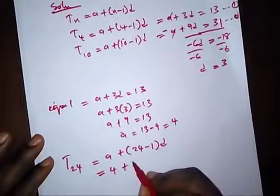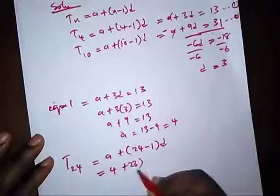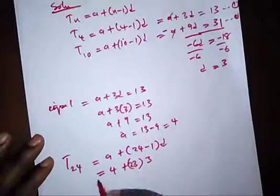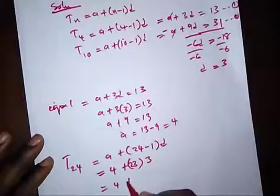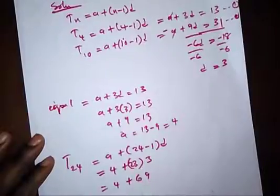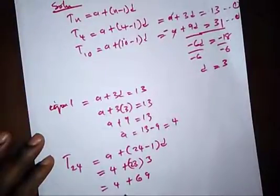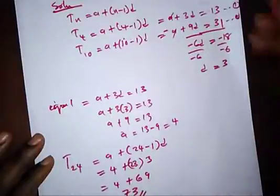Opening this bracket, we have 23. And what is D? D is 3. So from here, we have 4 plus, this times that is 69. And our answer plus this, we have 73.